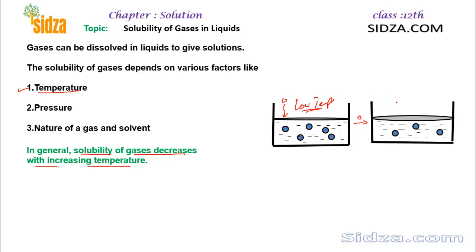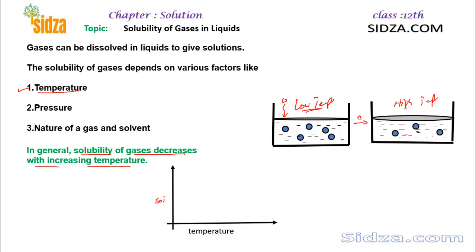If you increase the temperature, that means at a higher temperature, less gas molecules are soluble in the liquid. So the solubility of the gas is inversely proportional to the temperature. The graph of solubility versus temperature will show that if you increase the temperature, solubility of the gas decreases.